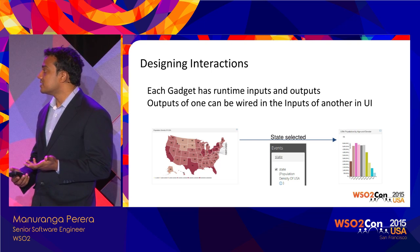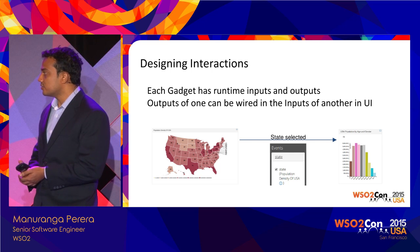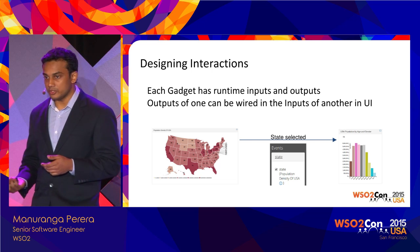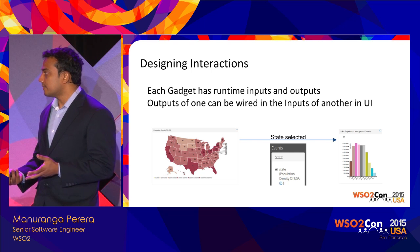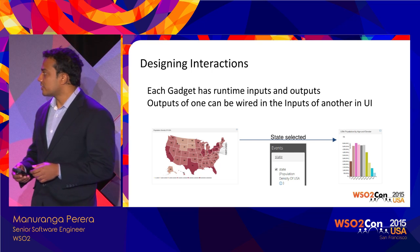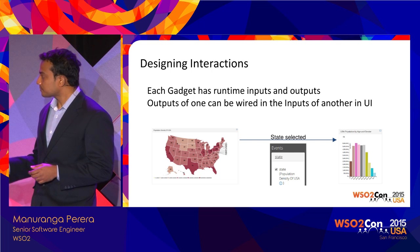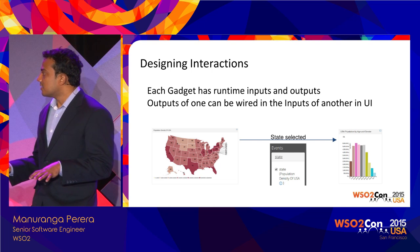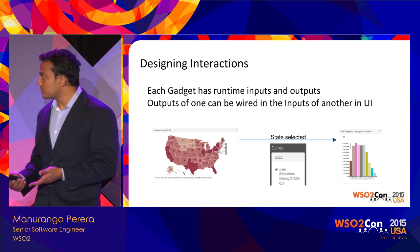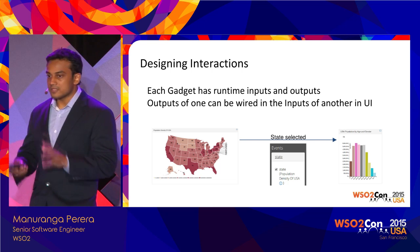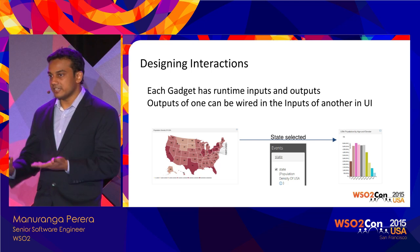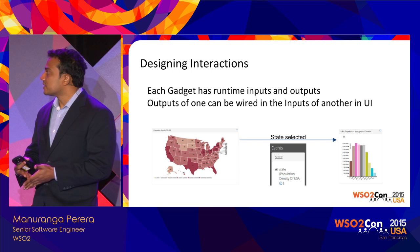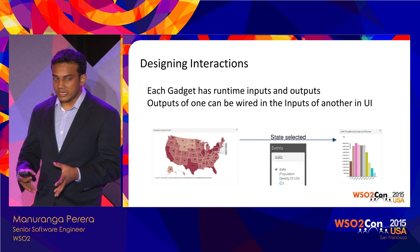The next big thing — and the functionally largest feature introduced from version one to two — is pub/sub state wiring in the UI. I'll do a demo at the end to demonstrate this. What you can do is create one gadget with well-defined outputs, and then another gadget can take that as an input and upon receiving it, change the dataset it shows. This is basically dynamic splicing of data, and you can use it to implement drill-down charts or data slicing.